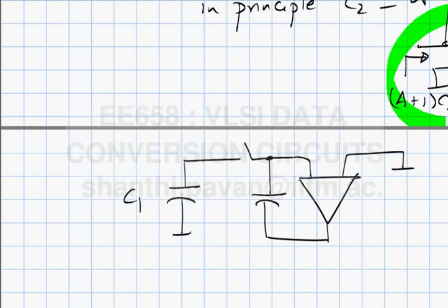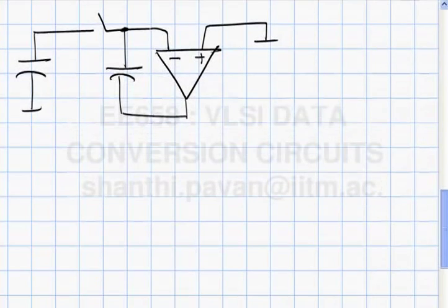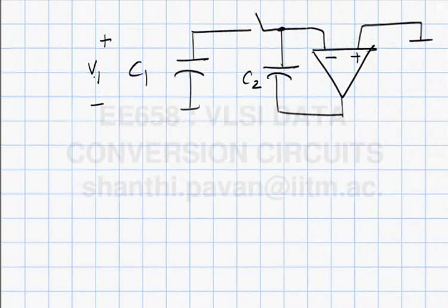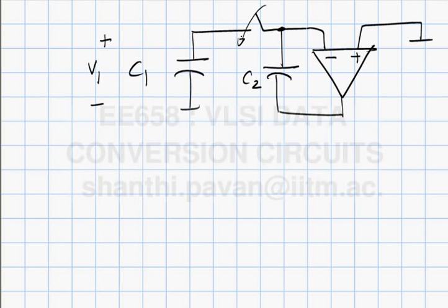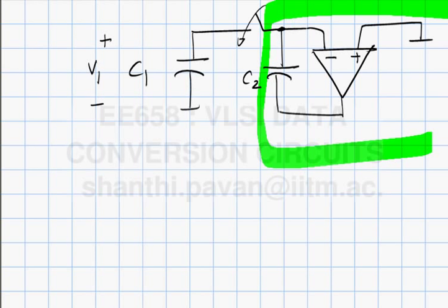The plus terminal must be grounded. This is C2. Assuming we are competent enough to build an amplifier with gain infinity — the moment I close the switch, all the charge from C1 must get onto this infinite capacitor, the construction shown in the green box.